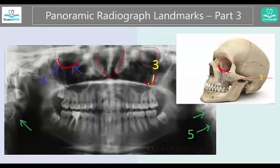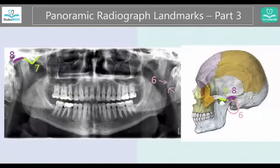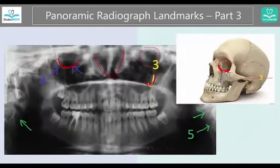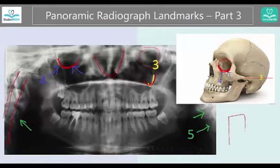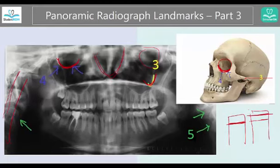Now let's look at number five, which was the spine. If the patient is curving or is biting a little too forward in your bite block — there is a notch — ask the patient to put their anterior teeth right here. Because if they are biting a little more forward like that, the spine will be in the way and it would be captured on both sides. So this area is fine.